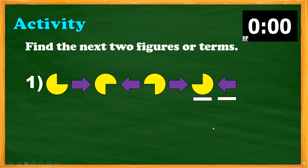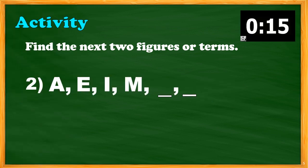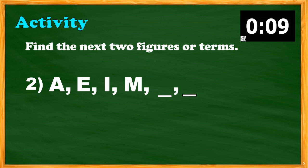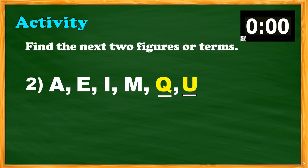Question number 2: we have A, E, I, M. Find the next two figures or terms. Timer starts now for 15 seconds. If your answer is Q and U, you got the correct answer.